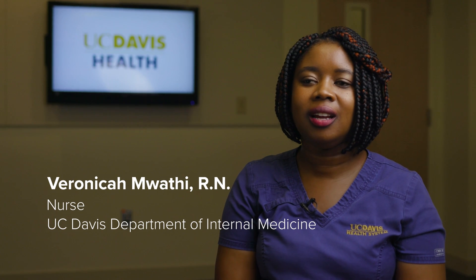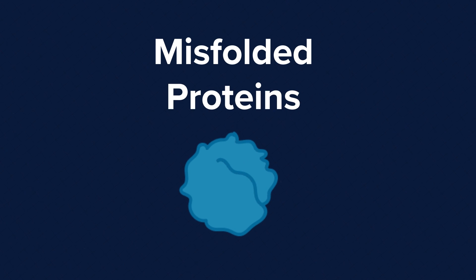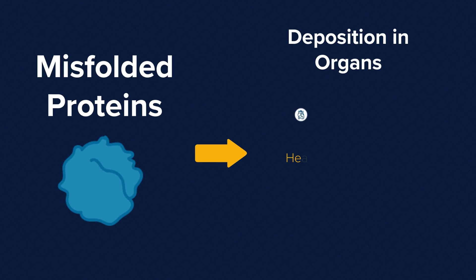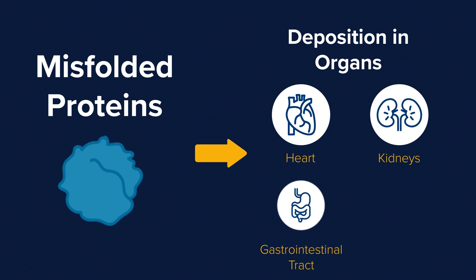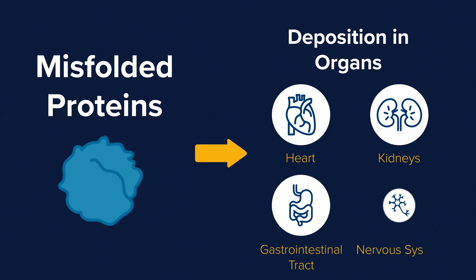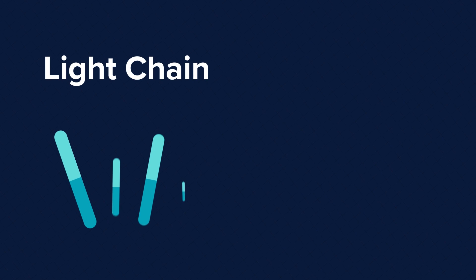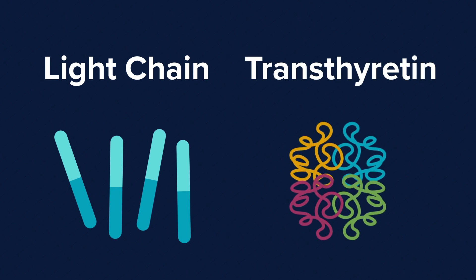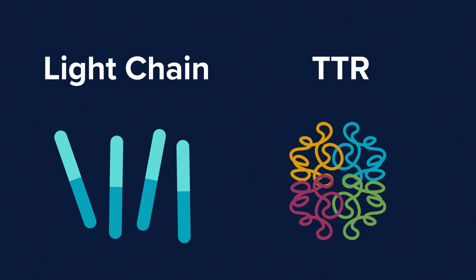Cardiac amyloidosis is a condition in which proteins misfold and deposit into your different organs, such as the heart, the kidneys, the GI tract, and different parts of the body. There are two basic types of amyloidosis: light chain amyloidosis, and the more common type, transthyretin amyloidosis, which we commonly call TTR amyloidosis.